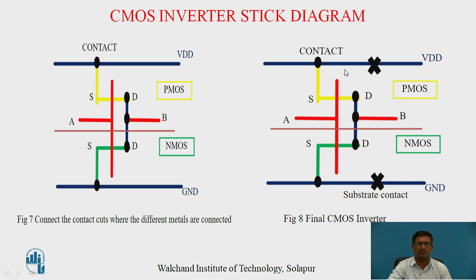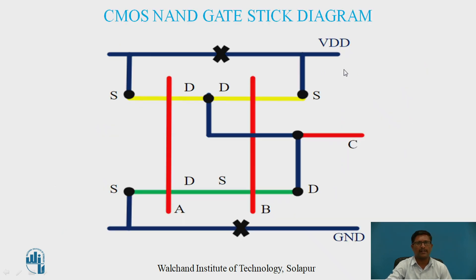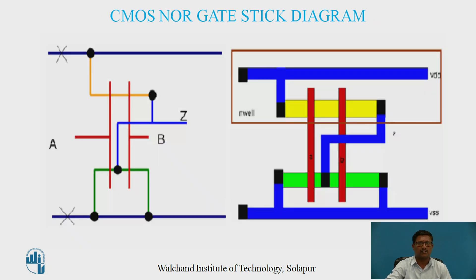Next, the stick diagram for the CMOS NAND gate is shown. It requires two NMOS and two PMOS transistors. In the pull-up network, the two PMOS circuits are in parallel with each other, and in the pull-down network, the two NMOS circuits are in series. Based on the layout of the NAND gate, we can easily draw the stick diagram as shown.